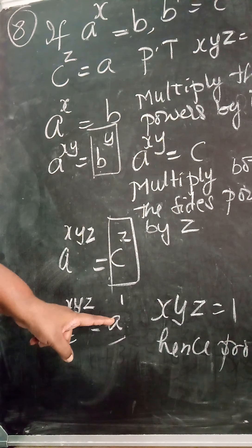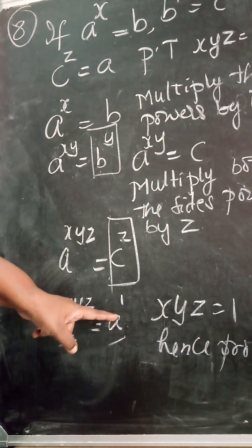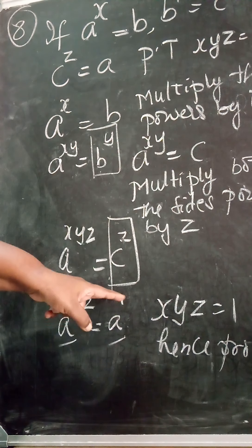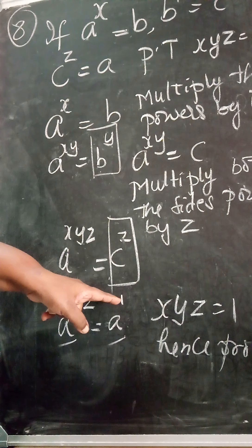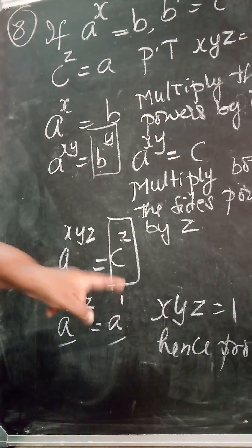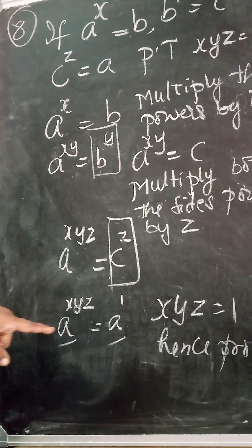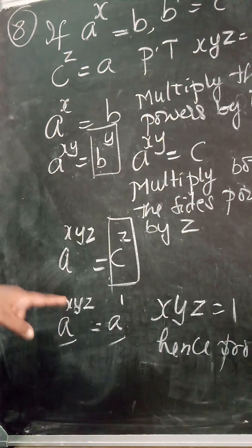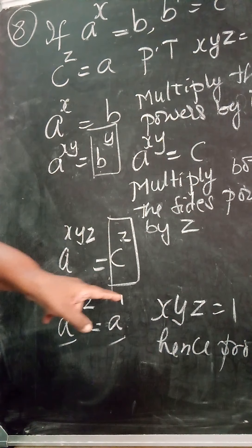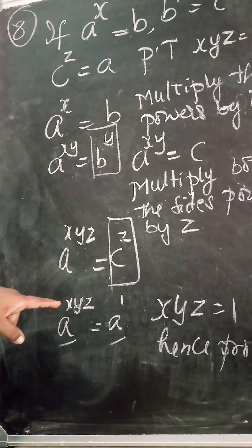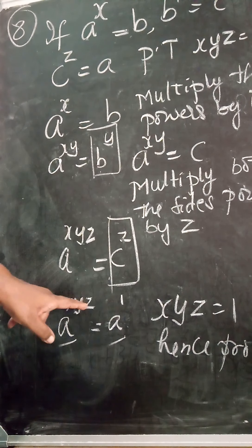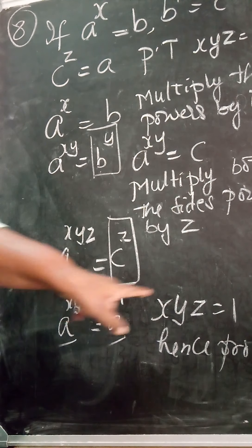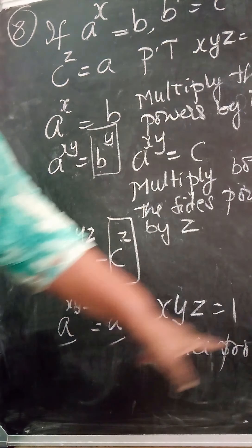Now multiply both sides' power by z, so I get a raised to the power of xyz equal to c raised to the power of z. Now c raised to the power of z is given as a. I write a as a raised to the power of 1 — if there is no power it is understood as 1. Since both sides have base a, the powers can be equated: xyz equals 1. Hence proved.